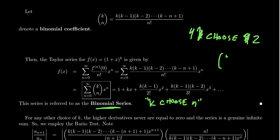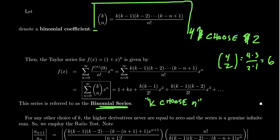So four choose two gives four times three over two times one, which equals six. The binomial series is a generalization of this binomial coefficient and the binomial theorem, which is why we call it the binomial series. This is a formula you'll want to record.